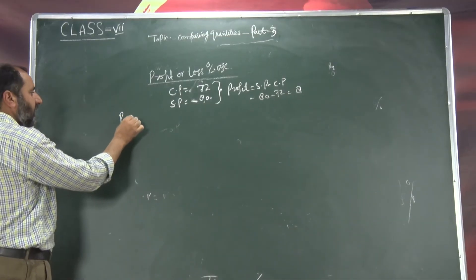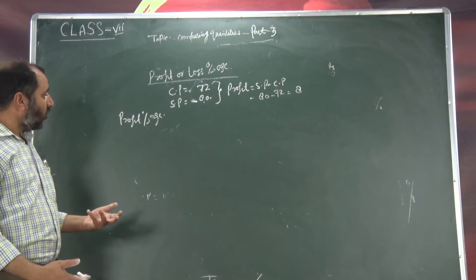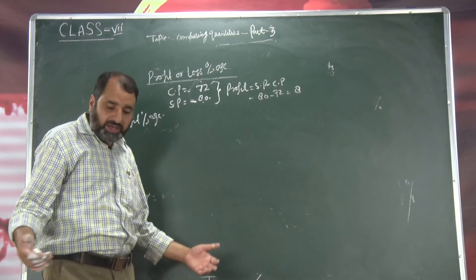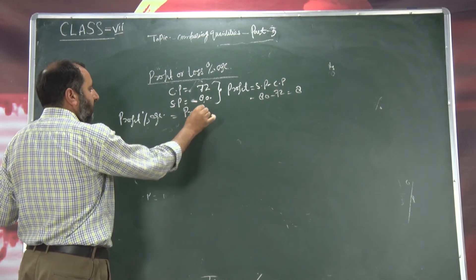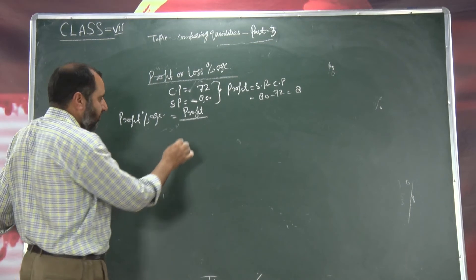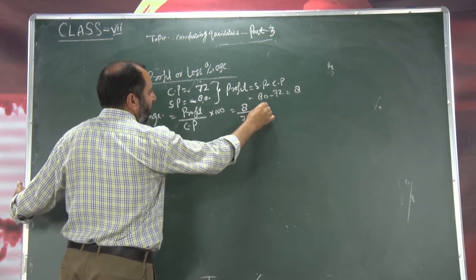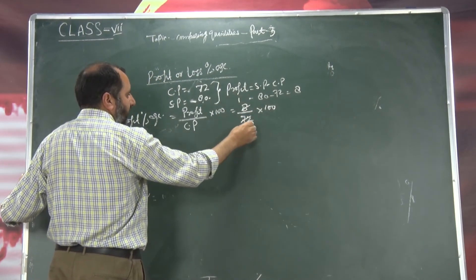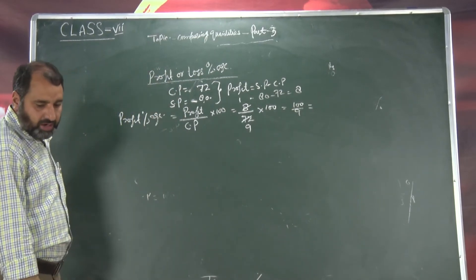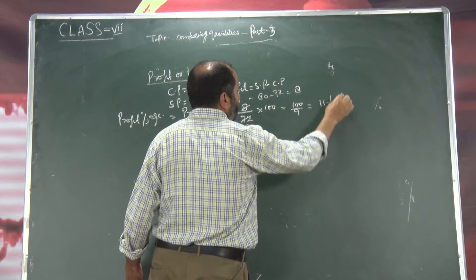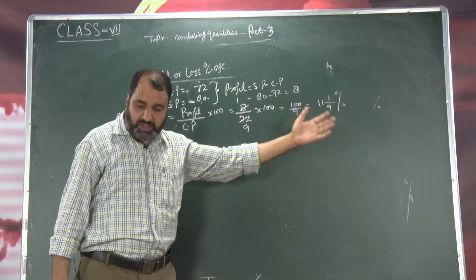So humara profit percent aya hai — agar profit eight hai, to profit percent aya hai eleven plus one point nine percent. Ab agar CP hai kisi bhi cheese ka one hundred twenty rupees, lekin selling price iska hai hundred — hum ne cheez laya hai one hundred twenty rupees mein, lekin bheej diya hai isko hundred mein. Ab yahan kya hai — if CP is greater than SP, to wahan loss hai. Loss means CP minus SP — CP one hundred twenty minus SP hundred — which is equal to twenty. Yahan twenty rupees loss hai.